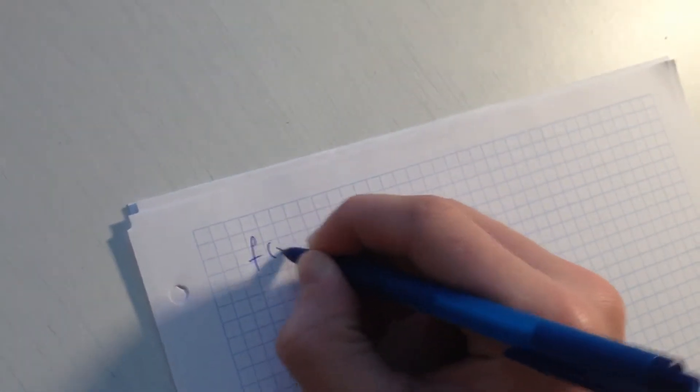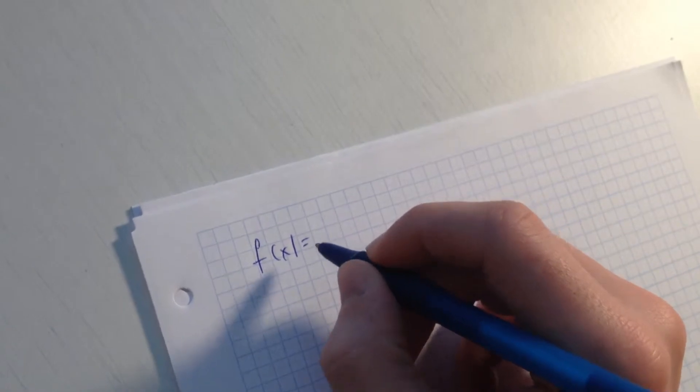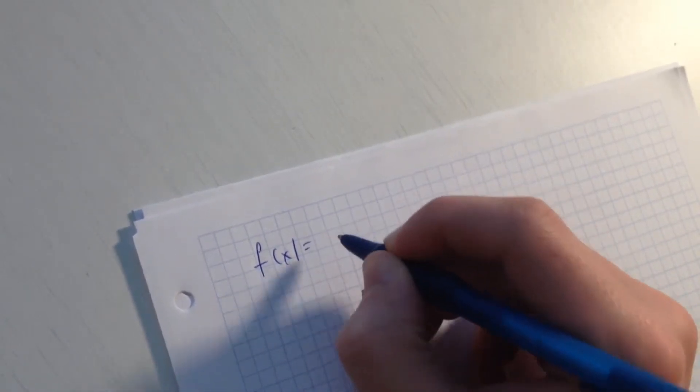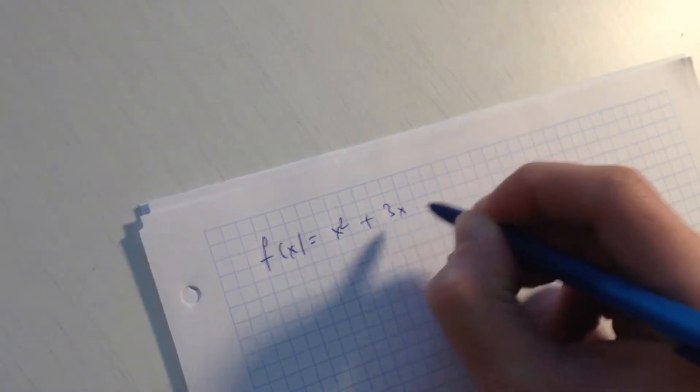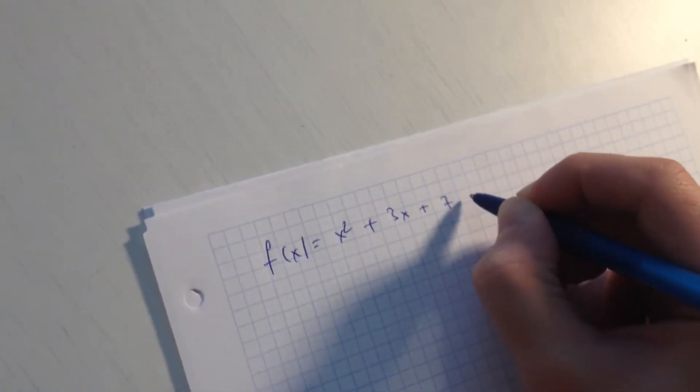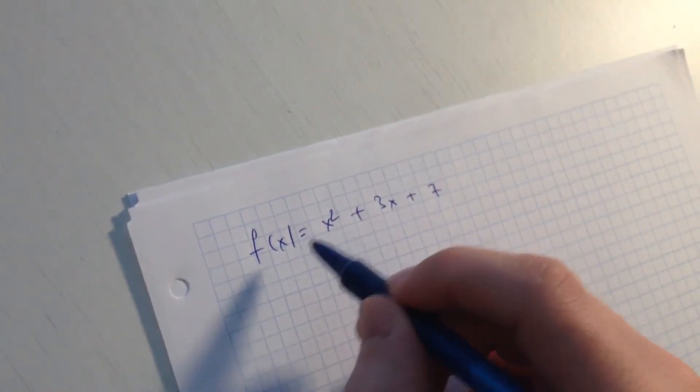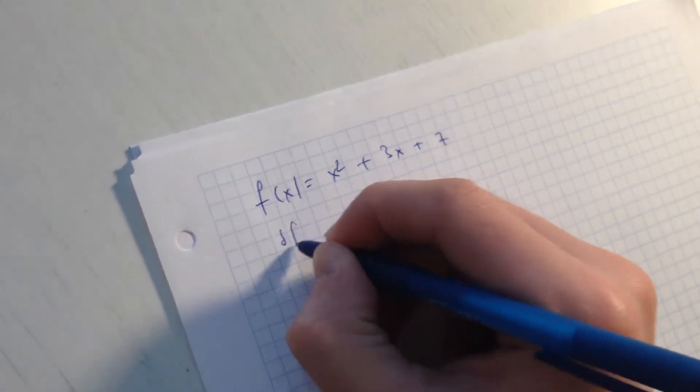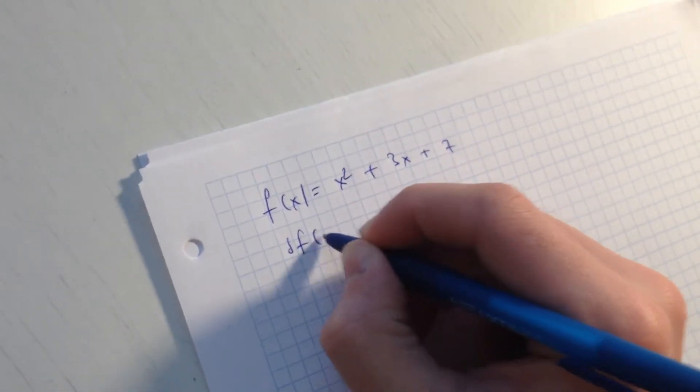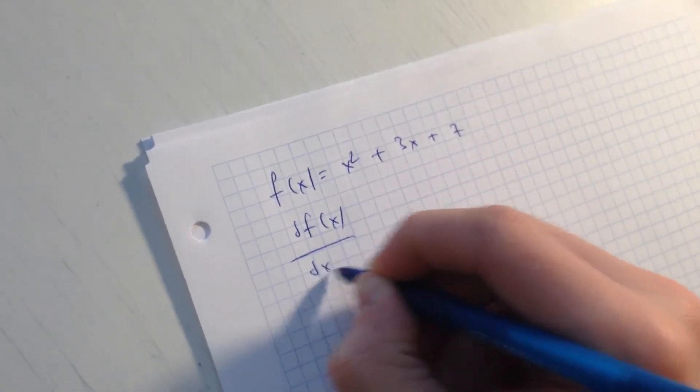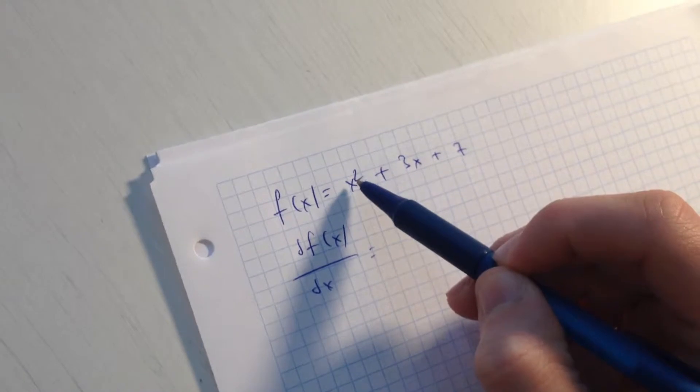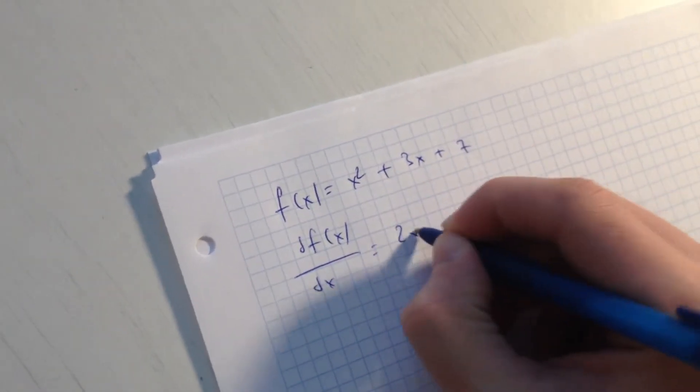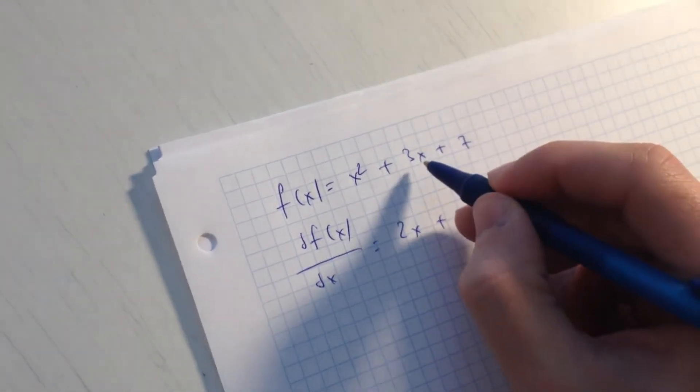f(x) = x squared plus 3x plus 7. So if we have to use this, this is the sign of the derivation. If I want to derive x squared, it will be just 2x. If x